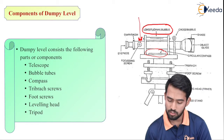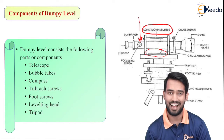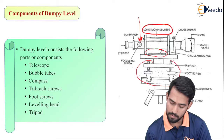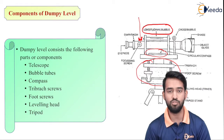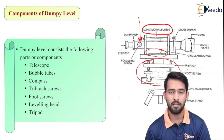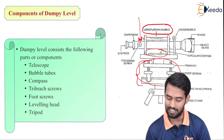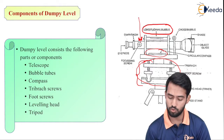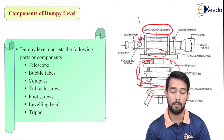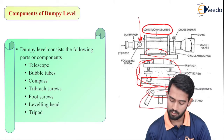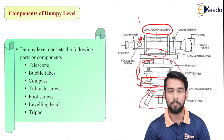The tri-batch screws are provided so that we can fix the dumpy level and arrange its height. Foot screws are used for leveling the dumpy level above the ground level. The entire assembly including tri-batch, foot screws, and the actual leveling head is known as the leveling head, which is fixed over the tripod to support the dumpy level. The tripod is used to firmly set up over the ground, on which we fix the dumpy level.